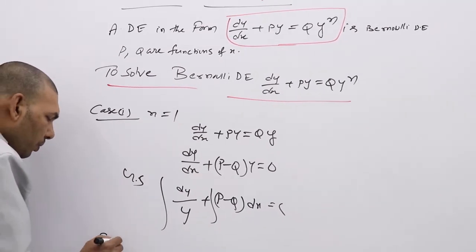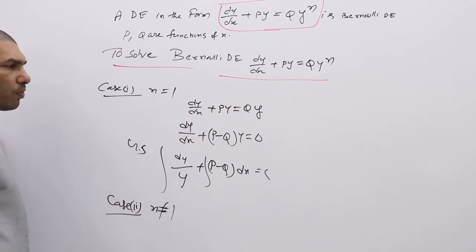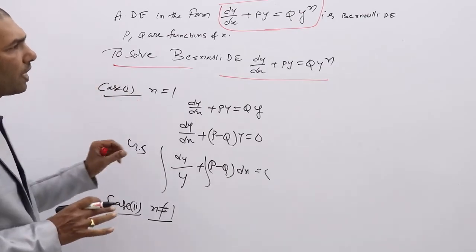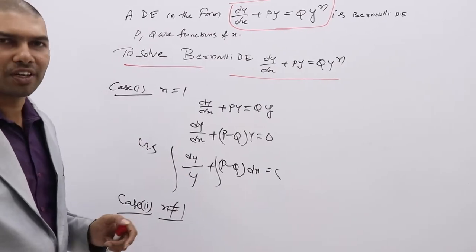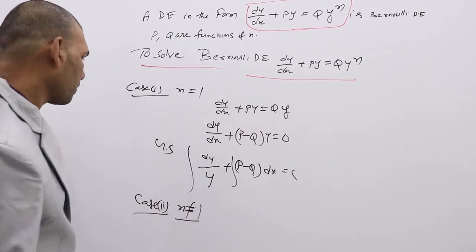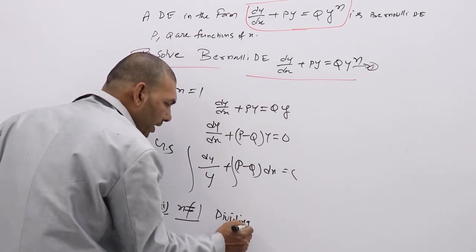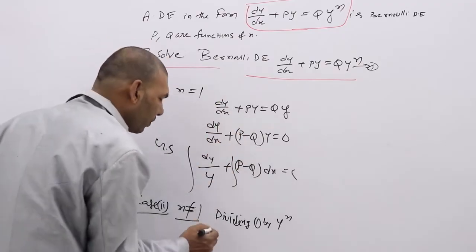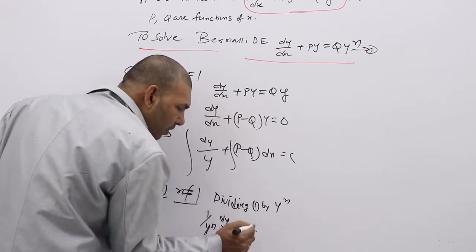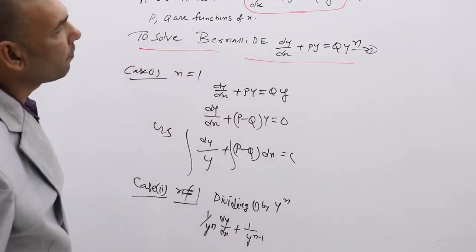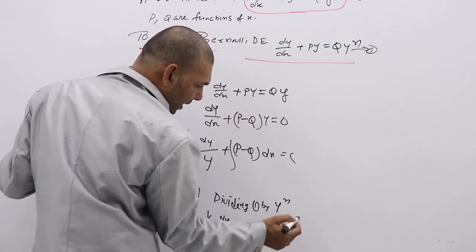For the case N not equal to 1, you need to convert the Bernoulli DE to a linear differential equation. To reduce it, divide the equation dy/dx plus Py equal to Qy^N by y^N. Dividing by y^N gives: (1/y^N)(dy/dx) plus y^(1-N) · P equal to Q, since y/y^N equals y^(N-1) and Qy^N/y^N cancels to Q.